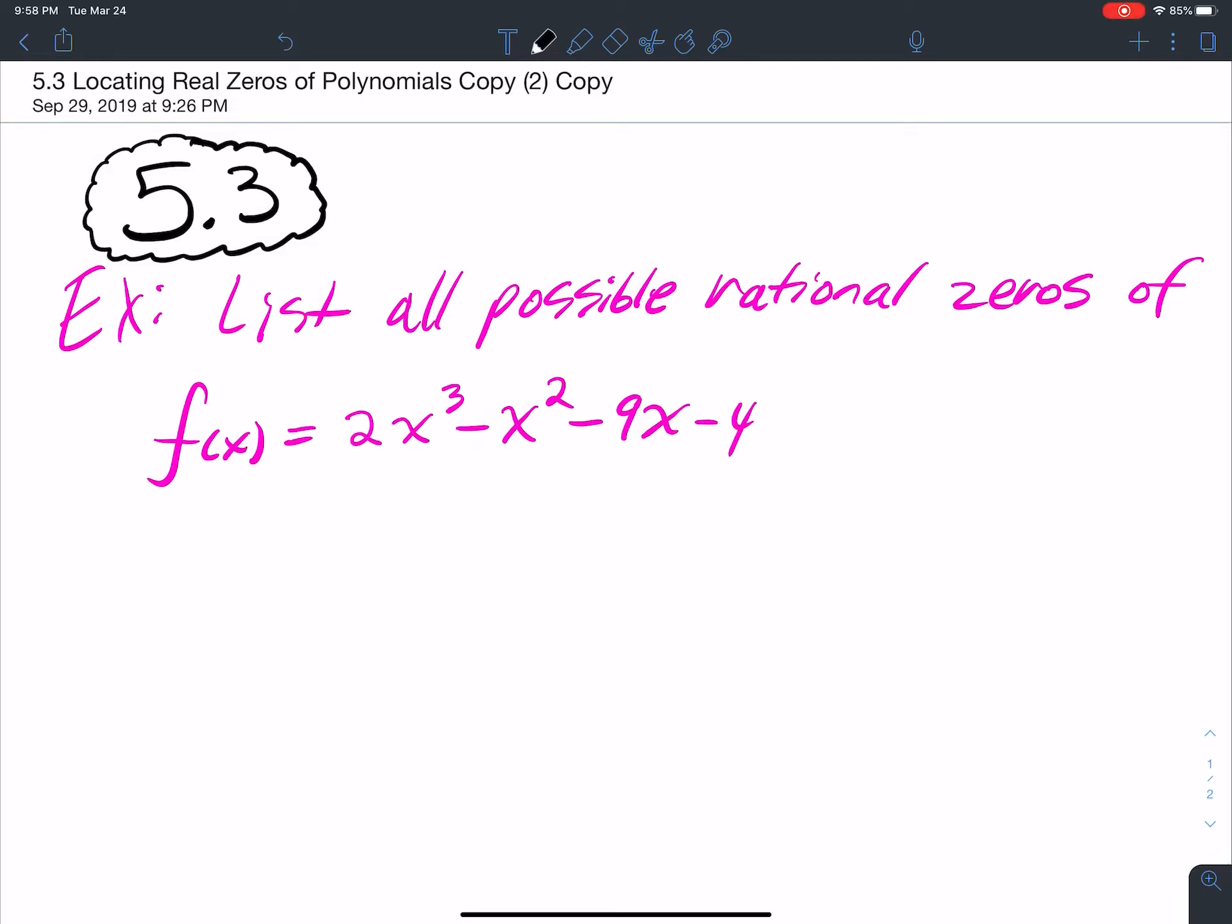Okay, so this is a video on problems from 5.3. I want you to list all possible rational zeros of this function here. So to do this type of problem, all we got to do is get the factors of the constant over the lead coefficient.